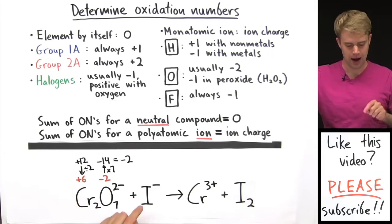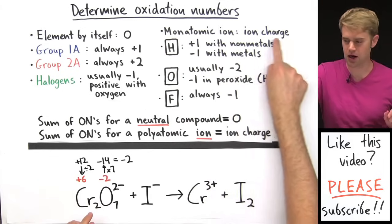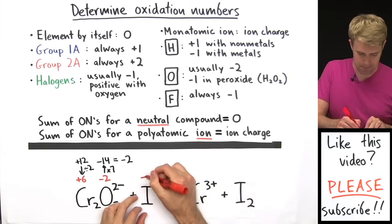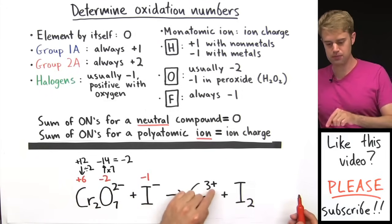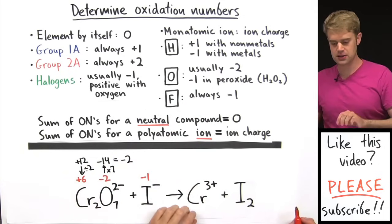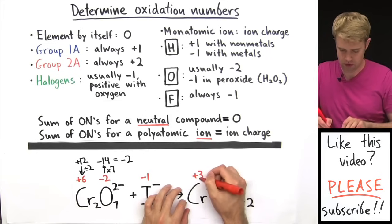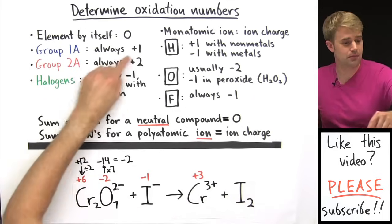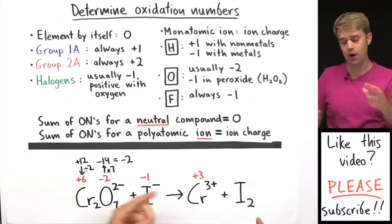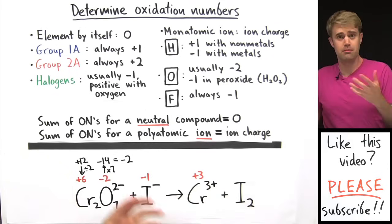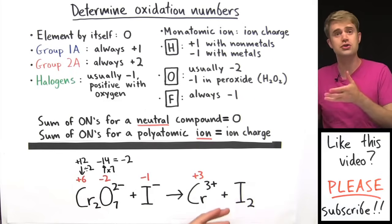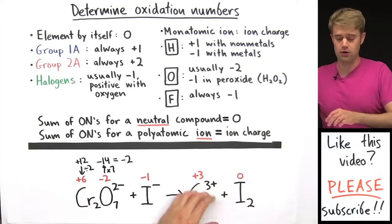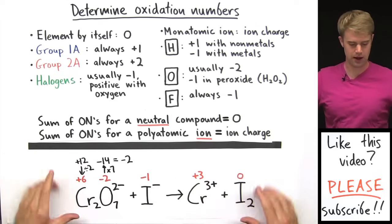The other ones are easier. I1- here is a monatomic ion, so its oxidation number is the same as its ion charge — it's going to be minus 1. Cr3+ here is another monatomic ion, so its oxidation number is going to be plus 3, the same as its ion charge. And over here, I2 is just an element by itself — just iodine, two iodine atoms connected together — so it is going to have an oxidation number of 0. So these are the oxidation numbers for the elements in this equation.